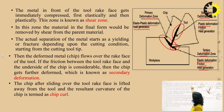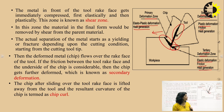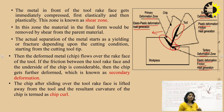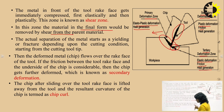The metal in front of the rake face gets immediately compressed, because the tool is exerting force over the workpiece. The material first gets compressed elastically and then plastically. The material in the final form would be removed by the shearing action from the workpiece. The actual separation of the metal starts as yielding or fracture, depending on the cutting conditions.